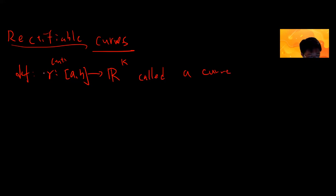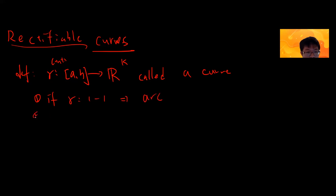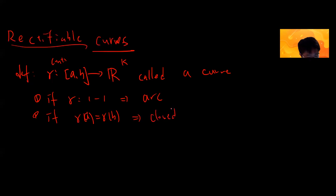Two small cases: if gamma is one-to-one, then it's called an arc. If gamma(a) equals gamma(b), then it's called a closed curve.